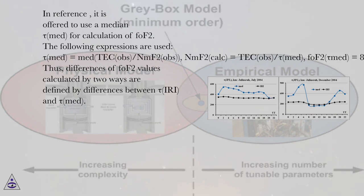Thus, differences of FOF2 values calculated by two ways are defined by differences between tau IRI and tau MED.